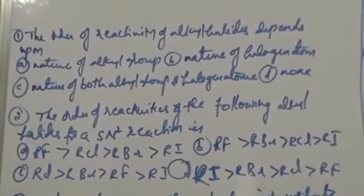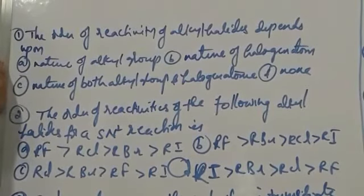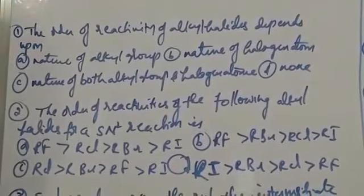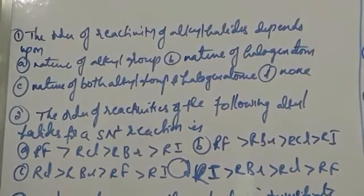Objective question: The order of reactivity of alkyl halides depends upon the nature of the alkyl groups. So the order depends upon the nature of the alkyl groups.